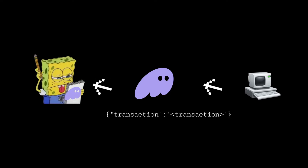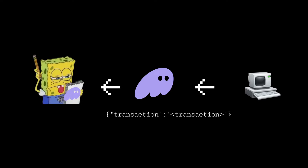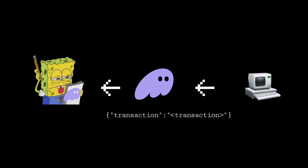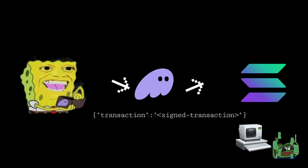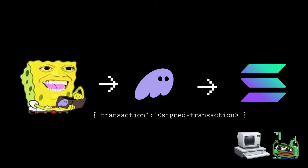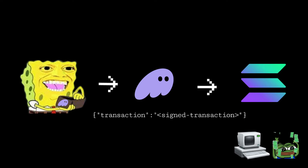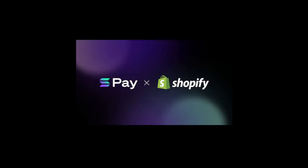It then sends this custom transaction back to the wallet, which parses it and presents it to the user. If the user signs the transaction, it's broadcasted to the blockchain, at which point the server can release the product.